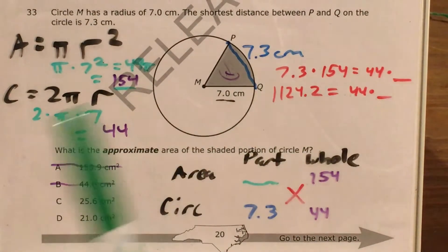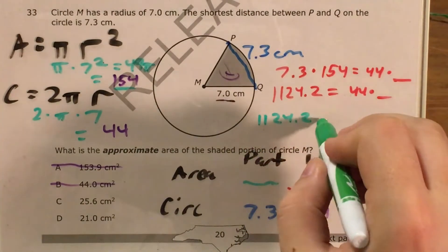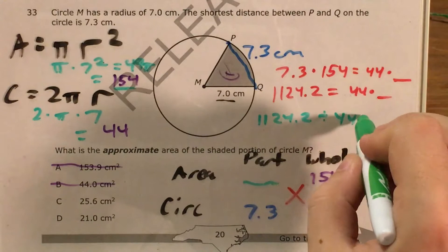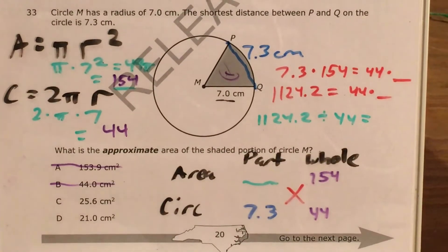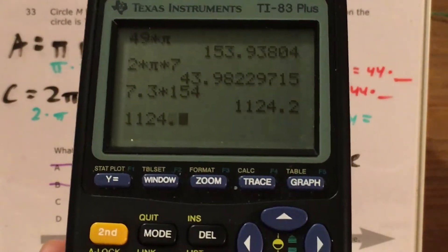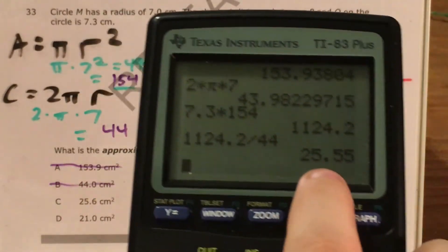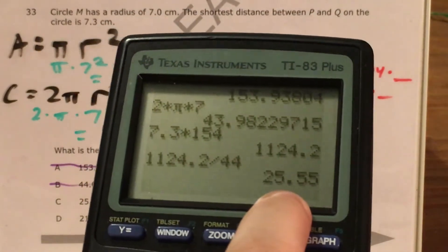And now, whether I use fact families or principles of equations, I should get that 1,124.2 divided by 44 is going to give me my answer. And so I do 1,124.2, divide that by 44, and it gets me 25 and 55 hundredths.